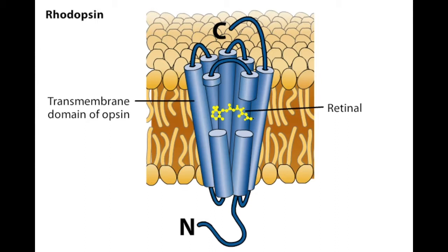The photopigments in the rods and the three types of cones differ in the protein portion of the molecule, which tunes retinal to absorb specific wavelengths of light.